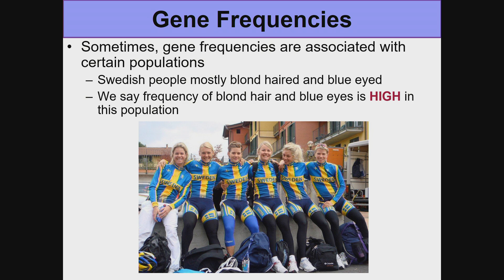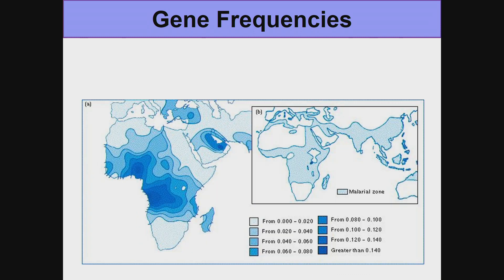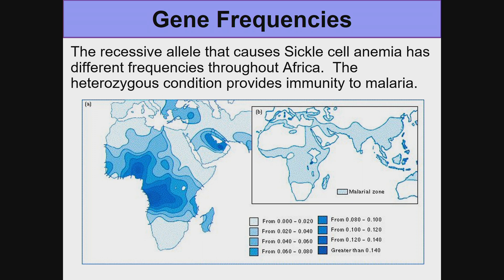Sometimes gene frequencies are associated with certain populations. For example, Swedish people are mostly blonde-haired and blue-eyed, so we say the frequency of blonde hair and blue eyes is high in that population. Another example: the recessive allele that causes sickle cell anemia has different frequencies throughout Africa, because the heterozygous condition provides immunity to malaria — giving a selective advantage in areas where malaria is high — and that's why sickle cell anemia persists in the world.